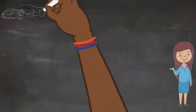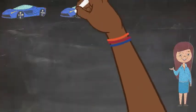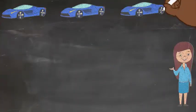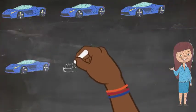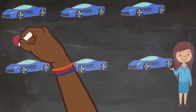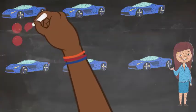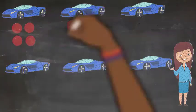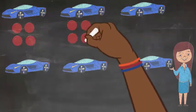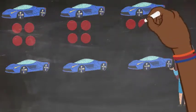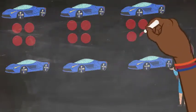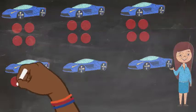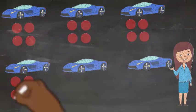Let's count the cars one more time — 6 total cars. Here I am drawing circles to represent the tires on each car: 1, 2, 3, 4.